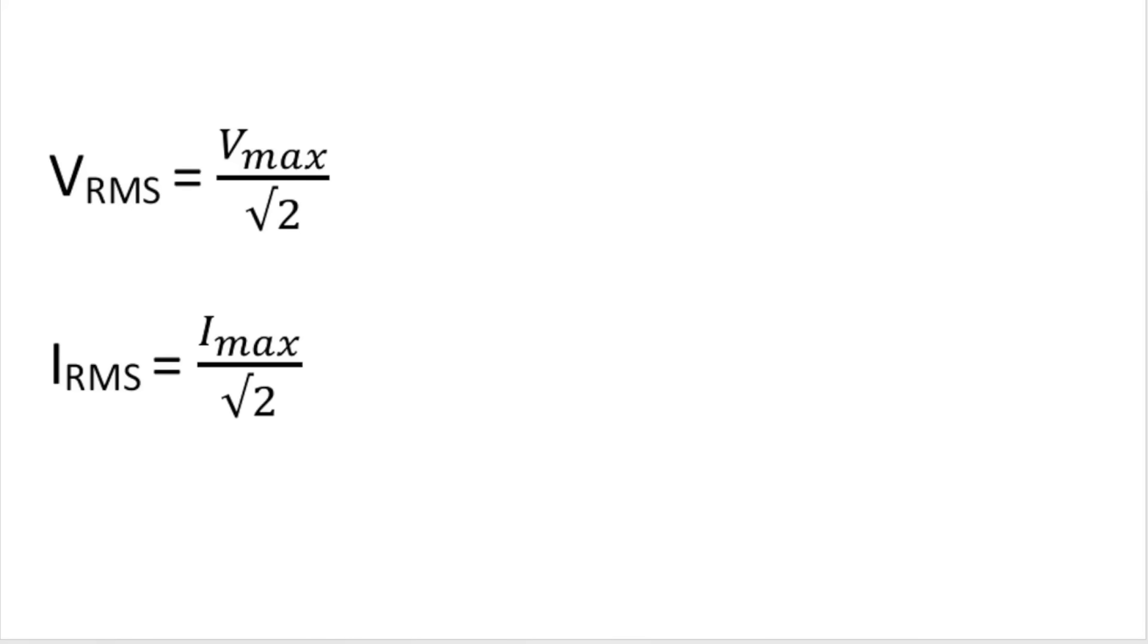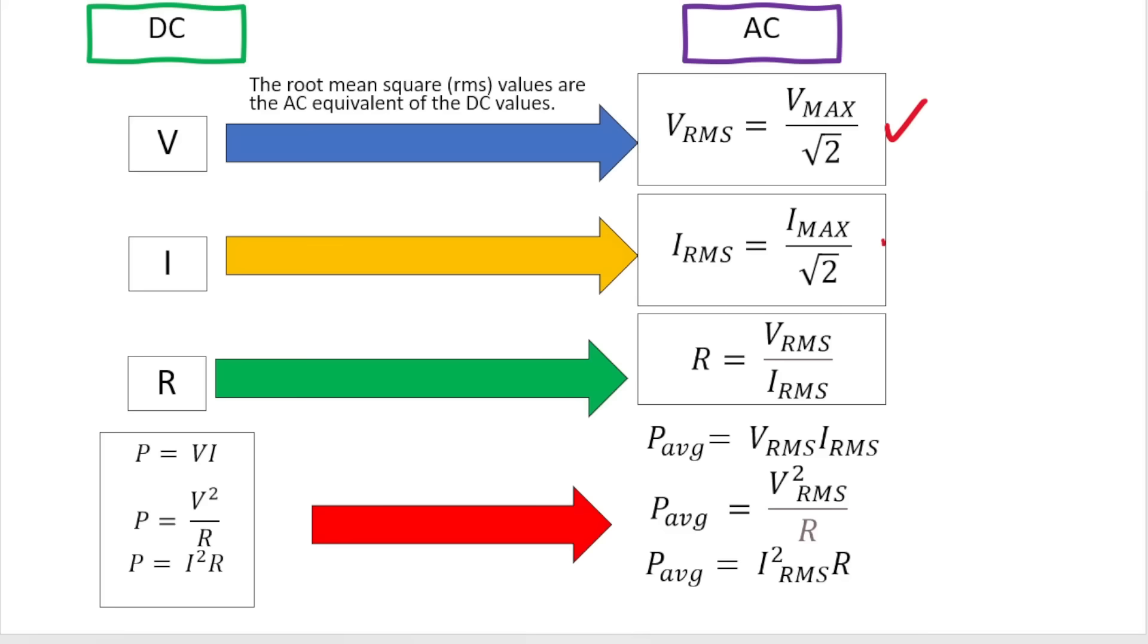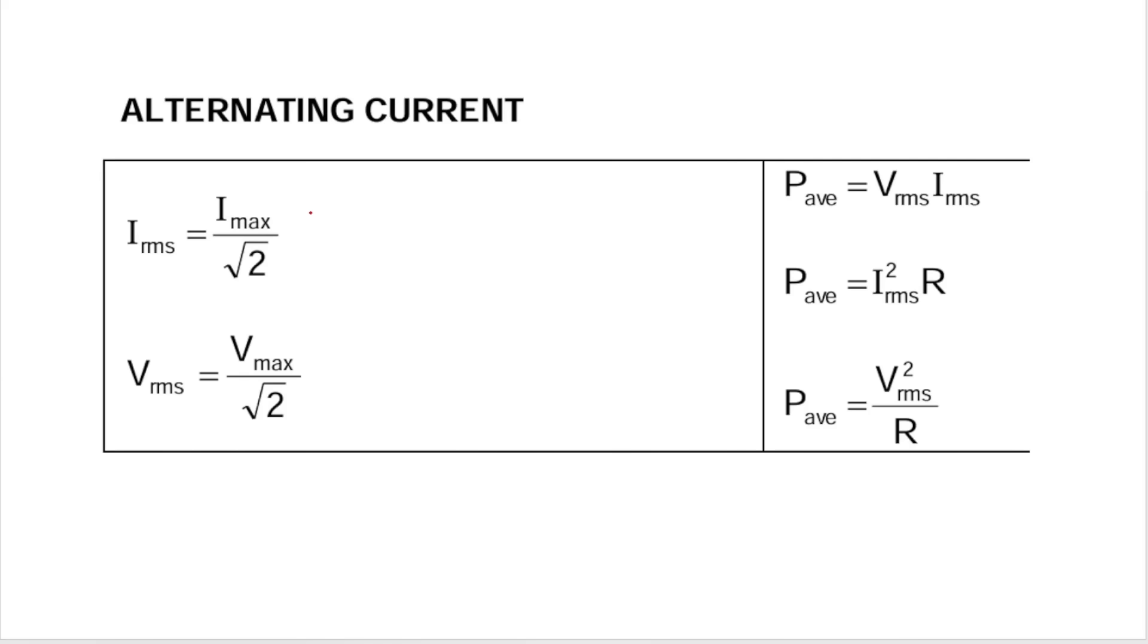So not to freak you out with all the formulas at once, this is the formula for calculating VRMS. Remember, this is measured in volts. V max is measured in volts. This is dividing by the square root of 2. IRMS is measured in amperes. I max is measured in amperes. So we've discussed this one and we've discussed this one. So then the other ones that appear on your formula sheet, I think maybe it would be useful for me to show you your formula sheet.